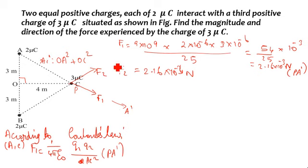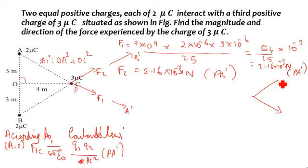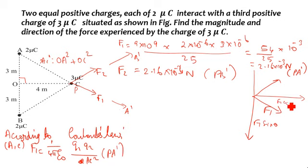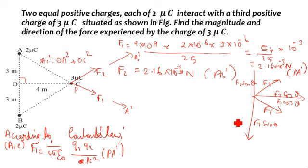A-direction equals B-direction. So I have two forces, F1 and F2, equal in magnitude. Resolving into rectangular components: the vertical component of F1 is F1 sinθ, and the horizontal component is F1 cosθ. For F2, the horizontal component is F2 cosθ and the vertical is F2 sinθ. Since F1 and F2 are the same magnitude but in opposite vertical directions, the vertical components cancel. Total force equals F1 plus F2.